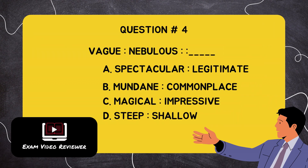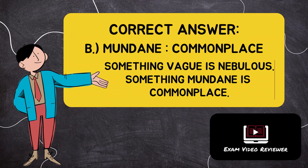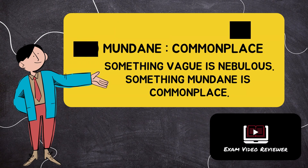Question number four: vague is to nebulous as blank. Letter A: spectacular is to legitimate, Letter B: mundane is to commonplace, Letter C: magical is to impressive, Letter D: steep is to shallow. The correct answer is Letter B, mundane is to commonplace. Something vague is nebulous; something mundane is commonplace.